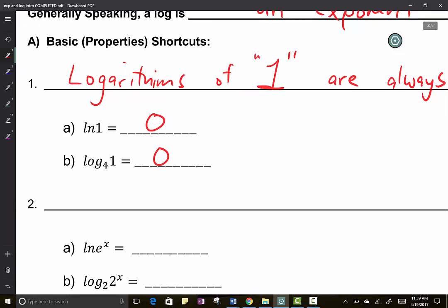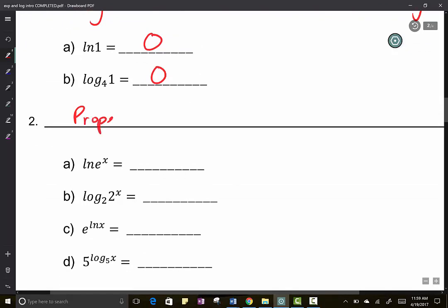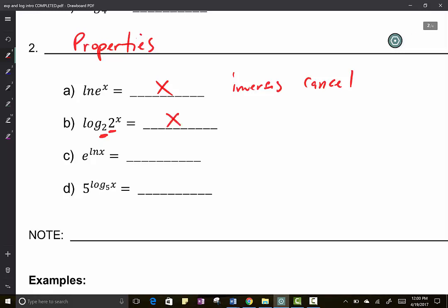If you find the natural log of the number one, it's always zero. No hesitation. But here are some properties that are not as automatic. If you have natural log of an exponential, then the exponent is just the answer. The inverses cancel. If you have the same number here, like if you see a 2 here and a 2 here, these are shortcuts that I just want you to memorize.